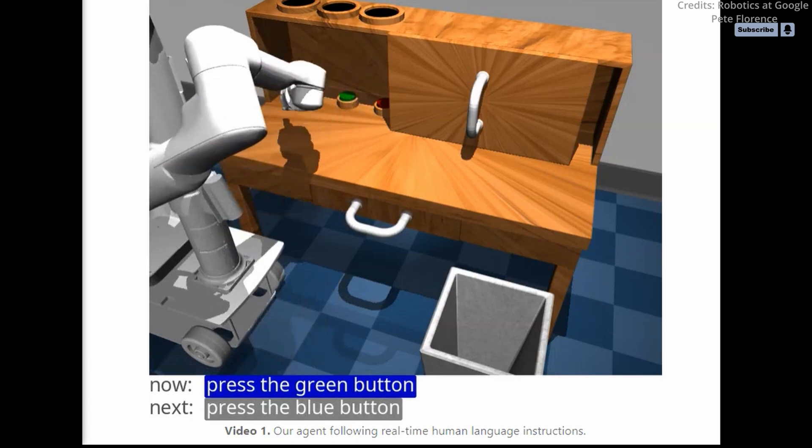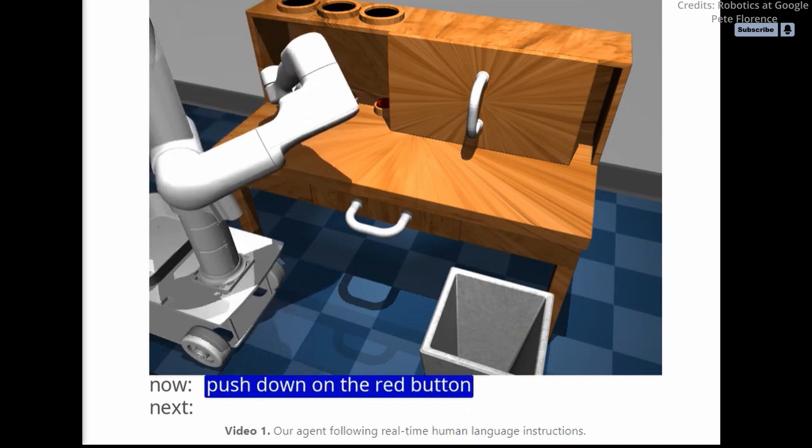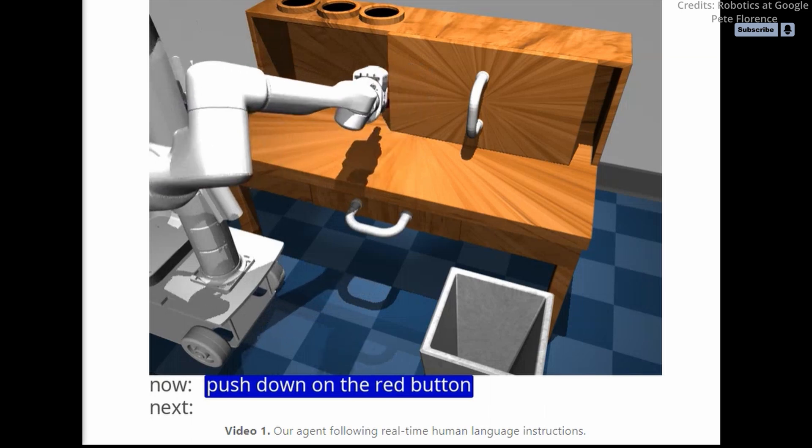Real-time language interaction would also make it easier for people and robots to collaborate on complex, long-term tasks with people providing occasional language feedback to guide the robot's manipulation.